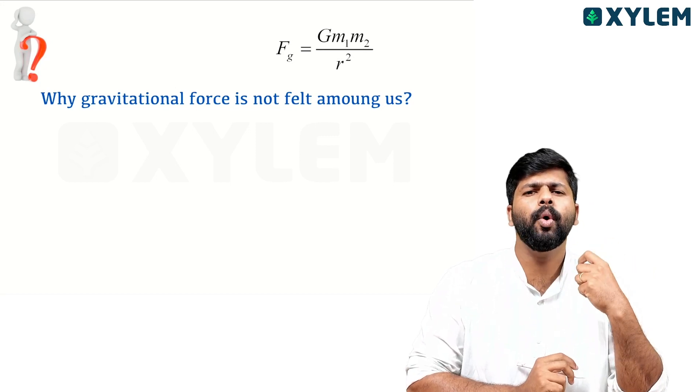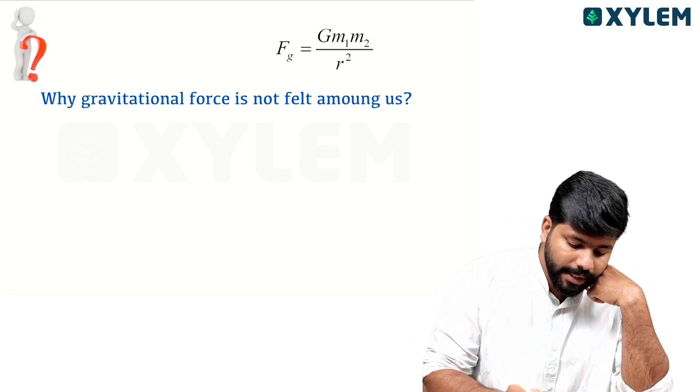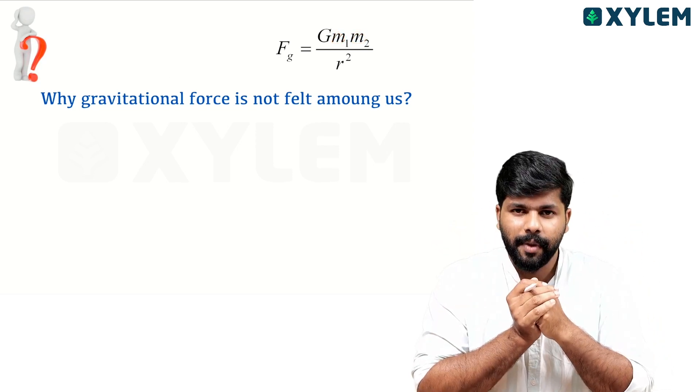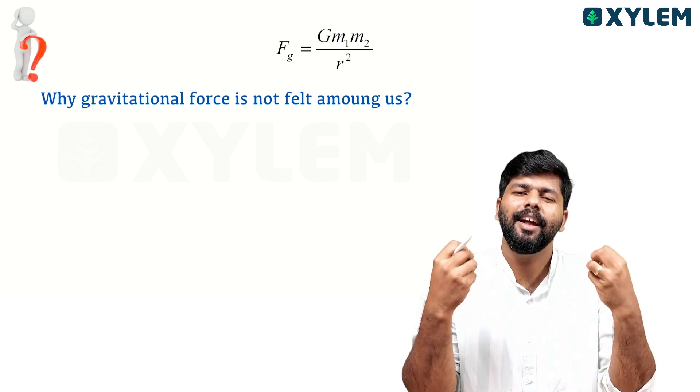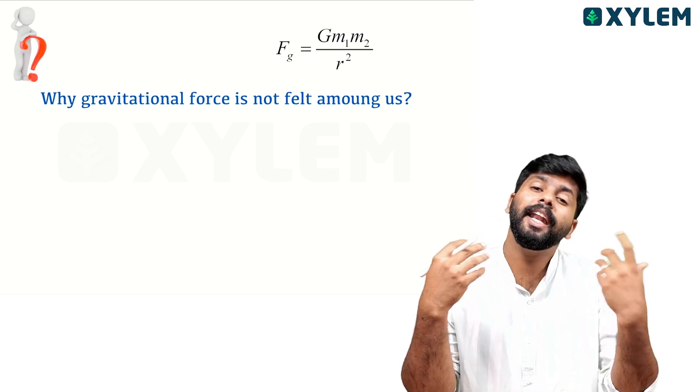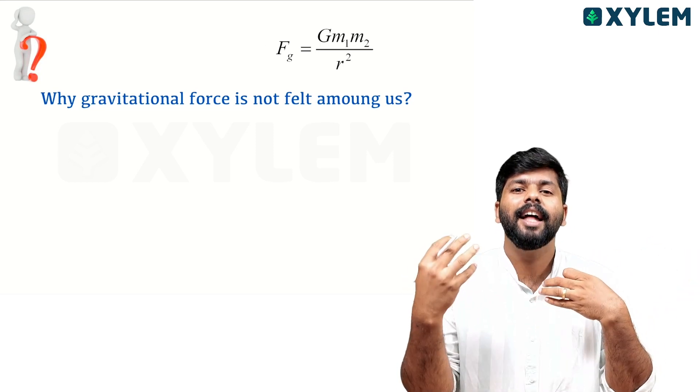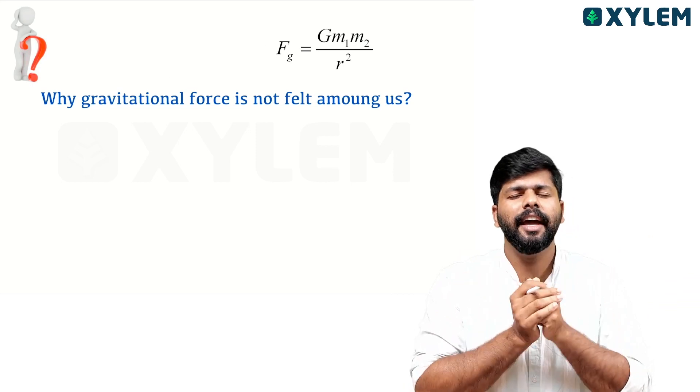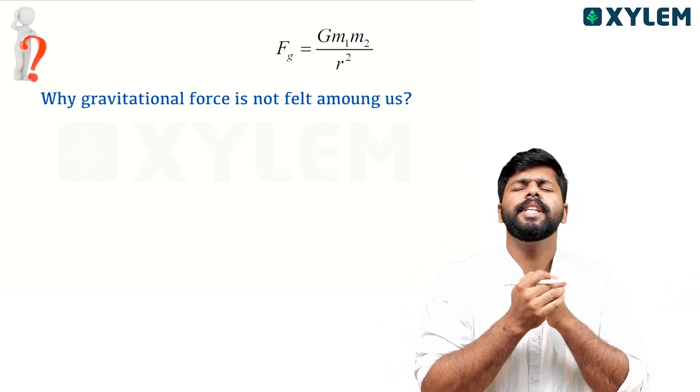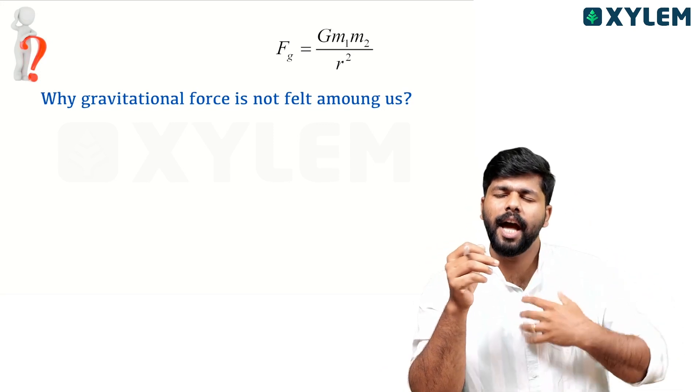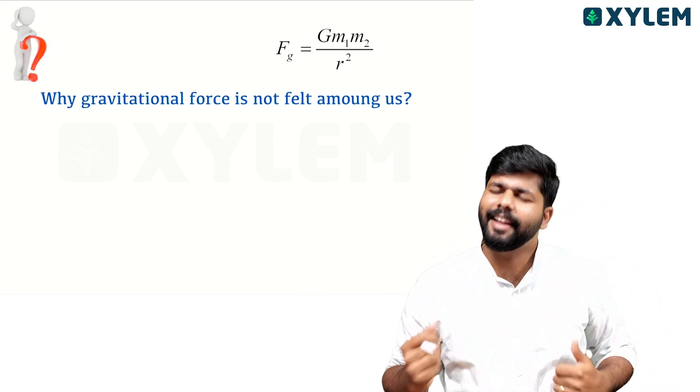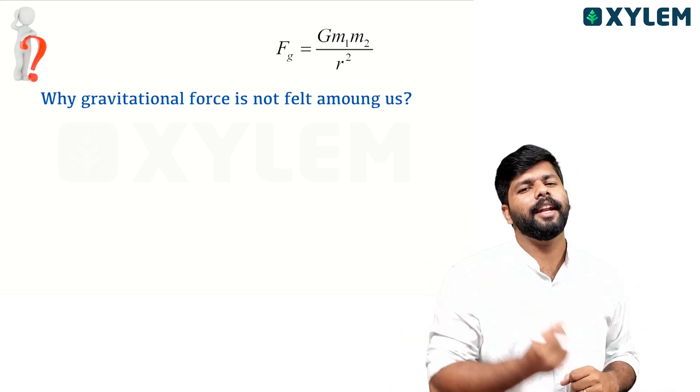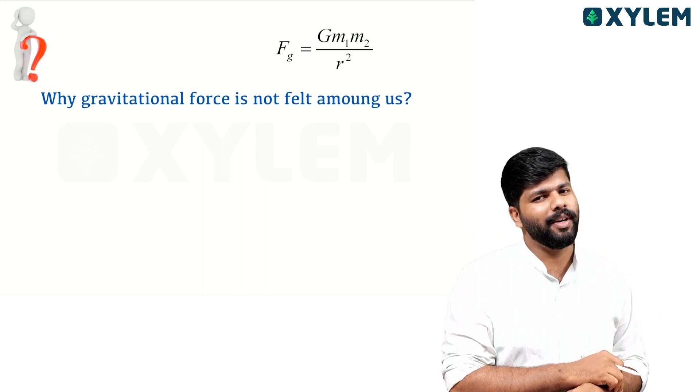This force is a considerable amount only when the mass is very large. The mass of us is very small compared to the mass of Earth, where we can feel the effect of gravitational force. Since the masses are very small, that force is very small. There is a gravitational force between me and you and all bodies in this universe, but the effect is very small because the mass compared to Earth is very small. Clear?